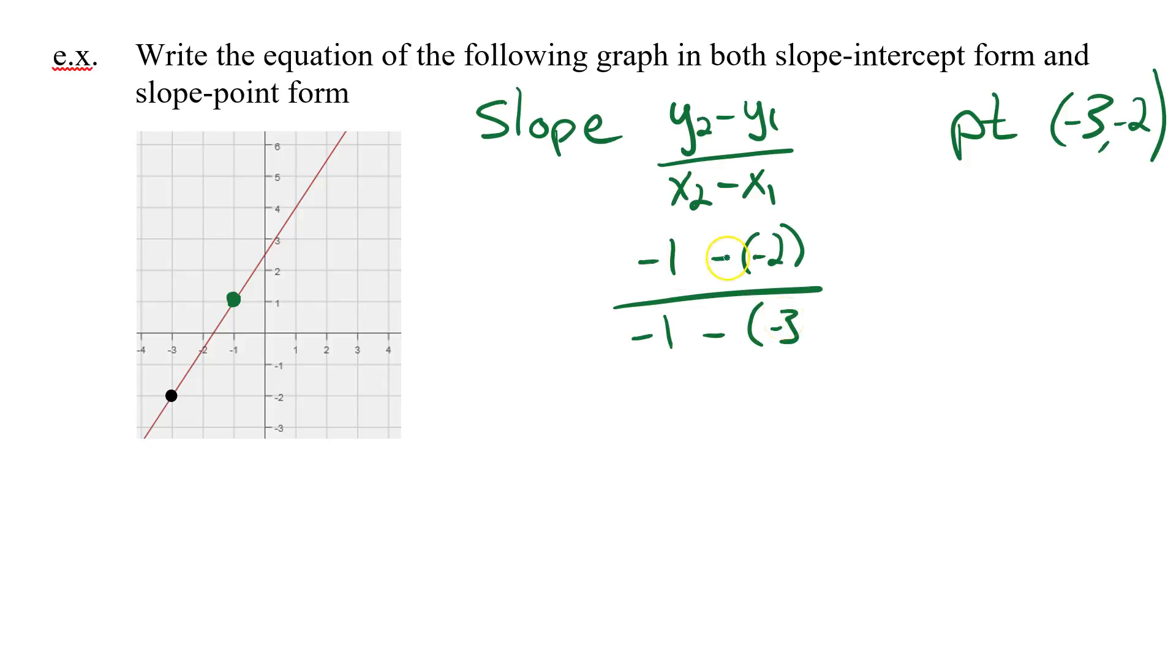This should be positive 1. I cross it, positive 1. So 1 minus negative 2. Subtracting a negative, same as adding. 1 plus 2 is 3. And negative 1 subtract negative 3. Subtracting a negative, same as adding. Negative 1 plus 3 is 2. So my slope is 3 over 2.